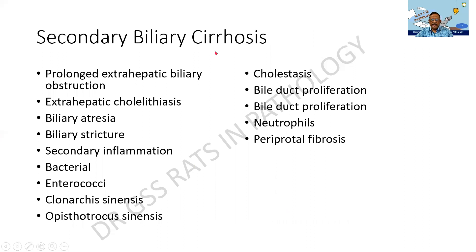There is another entity called secondary biliary cirrhosis. Primary biliary cirrhosis as mentioned is almost an autoimmune disorder. In secondary biliary cirrhosis it can be due to cholelithiasis, biliary atresia or non-development of the bile ducts, stricture or fibrosis of the bile ducts, secondary bacterial infections, or parasites such as Clonorchis sinensis or Opisthorchis. As a result, there can be cholestasis, bile lakes, bile duct proliferation, neutrophilic infiltrate, and periportal fibrosis.